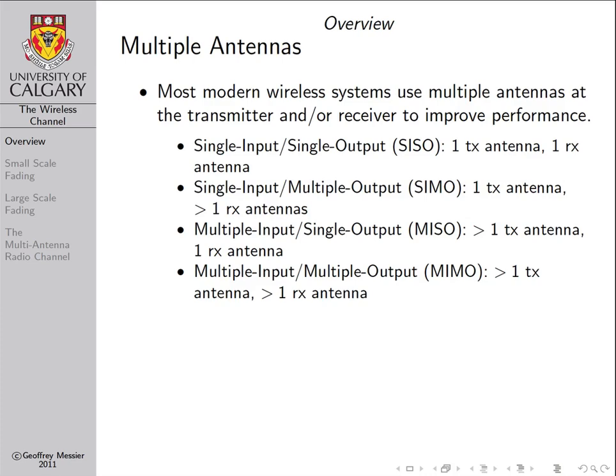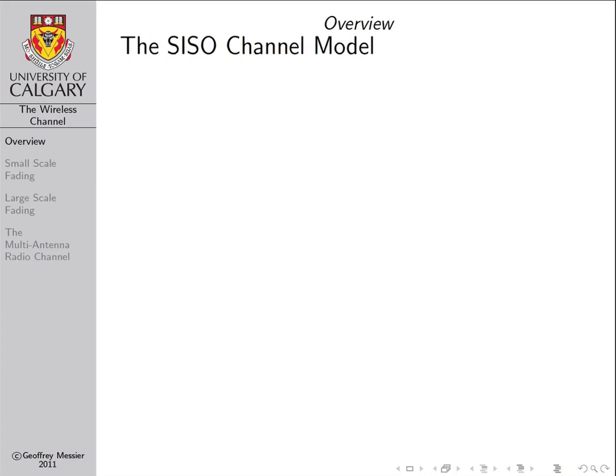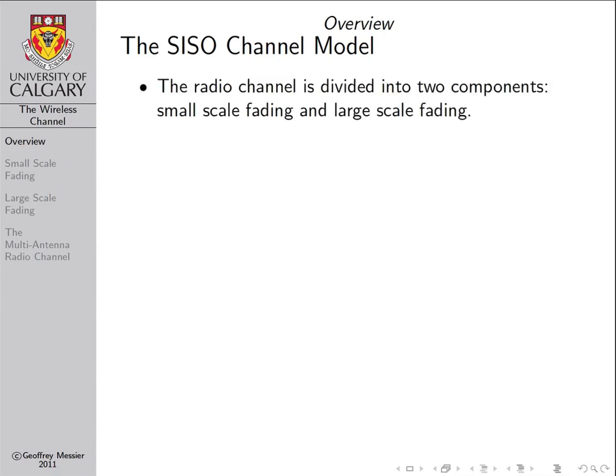To learn the fundamentals, we're going to start by looking at the SISO radio channel and then use those fundamentals to extend them to the multiple antenna radio channel. The radio channel is divided into two components: the small-scale fading component and the large-scale fading component. As you'll see on the topic list on the left of this slide, the discussion of small-scale and large-scale fading is going to divide the wireless course module into sections.